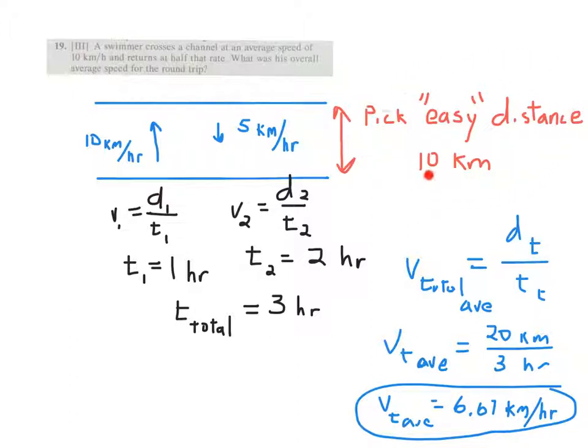Let's say it's 10 kilometers wide. I picked a multiple of 5 and 10, or you could pick like 20 kilometers wide, or you could pick any number, or you could call it d, could do it symbolically.